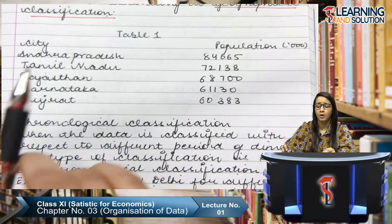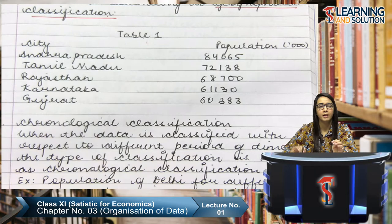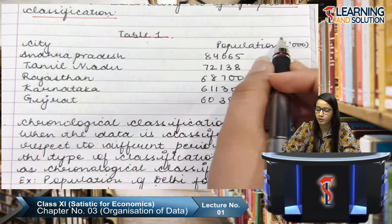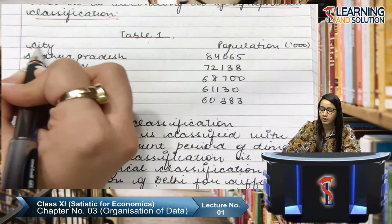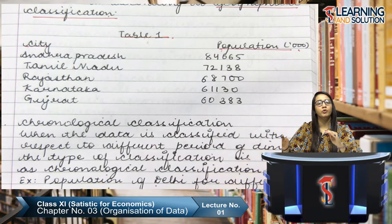Table 1 shows an example of geographical classification — it presents cities and their populations. When we classify population area-wise — for example Andhra Pradesh, Tamil Nadu, Rajasthan, Karnataka, Gujarat and their populations — we are organizing data geographically. Please make sure you mark all your tables correctly with their table numbers, as I will reference them going forward.